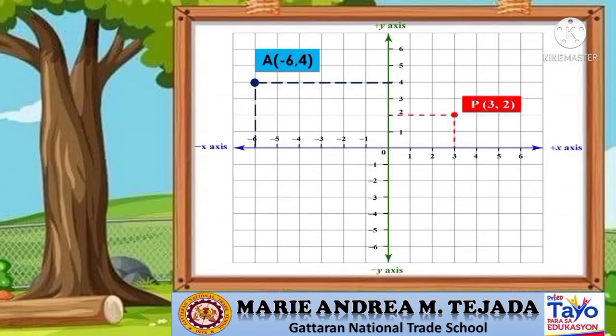Now let us try to plot points in the Cartesian plane. Let us plot point (3, 2). First, we are going to locate the X coordinate, which is positive 3 on the X axis, followed by the Y coordinate, which is positive 2. Then connect. The intersection is now the location of the point (3, 2).